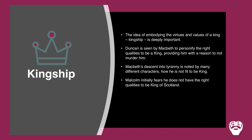Malcolm initially fears he does not have the right qualities to be King of Scotland — he suspects he may be too greedy or immoral — though he is eventually persuaded otherwise. There is also a close connection between God and the king: the king was seen as the physical manifestation of God. So when Macbeth becomes king it's almost like the devil has become king, which is why in certain quotes he's referred to not only as a tyrant but as a 'hellhound.'